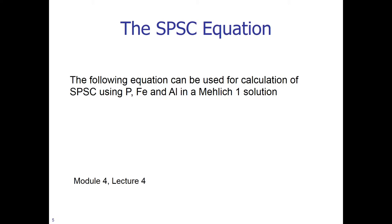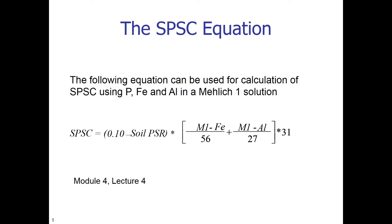The following equation can be used for calculation of SPSC using P, iron, and aluminum in a Mehlich-1 solution. This is the same equation used for upland soils. SPSC is equal to 0.1 minus the soil PSR, multiplied by iron and aluminum, and then multiplied by 31 to convert moles to milligrams P per kilogram. When using Mehlich-1 instead of the original procedure using oxalate, we need to multiply by a conversion factor of 1.3, which is the same conversion factor used for upland soils.